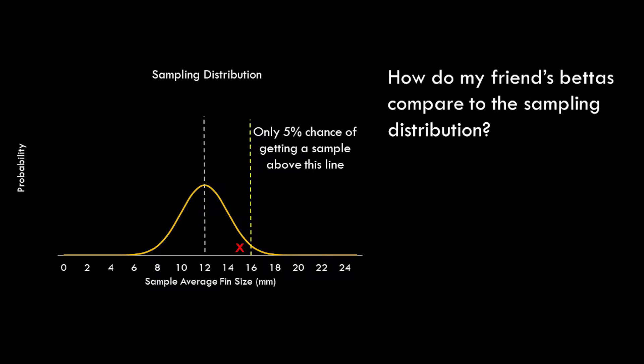So how do my friend's betas compare to the sampling distribution? I have the sampling distribution depicted here, and the average, as we know, is 12. I put a line at the area where there's only a 5% chance of getting a sample above that line. If you look at the average length of my friend's fish's fins, the length is 15 millimeters on average. That's arguably better than the population average. However, it doesn't cross that line I said was important for me to accept that this is not simply due to random chance. So while her fish are impressive, I'm not convinced.